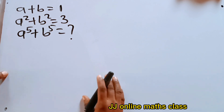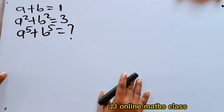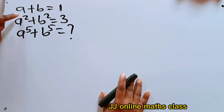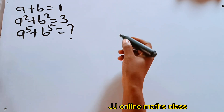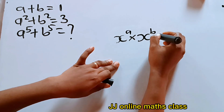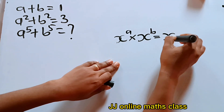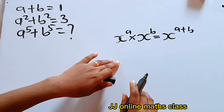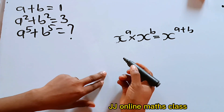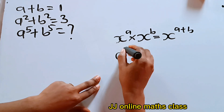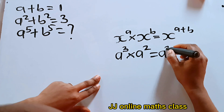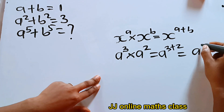The first thing we need to understand is the laws of indices, because for us to get a to the power of 5, it means we need to multiply a to the power of 2 by a to the power of 3. The law of indices states that x to the power of a times x to the power of b is equal to x to the power of a plus b — that is, if you have the same base, you add the powers. So for us to get a to the power of 5, we need a to the power of 3 times a to the power of 2, which gives us a to the power of 3 plus 2, which is a to the power of 5.